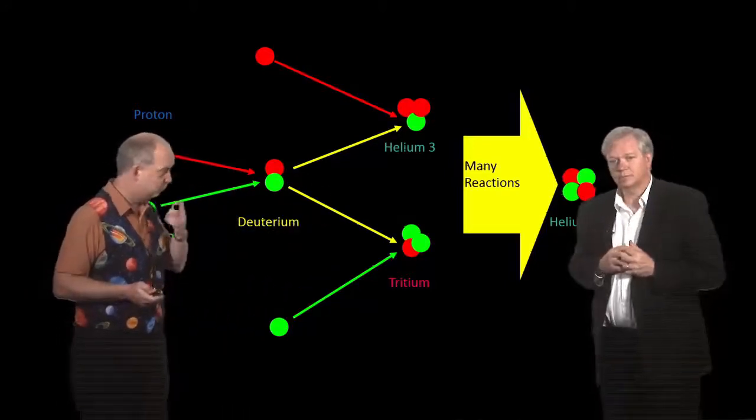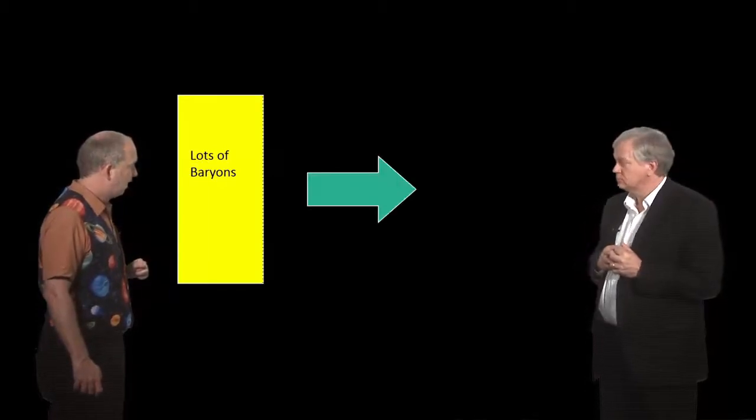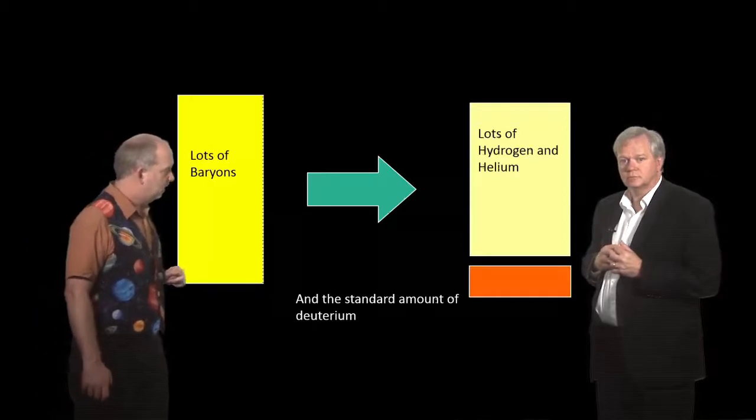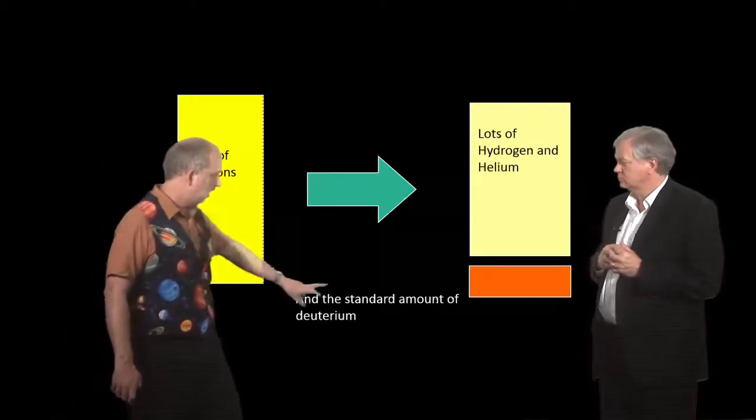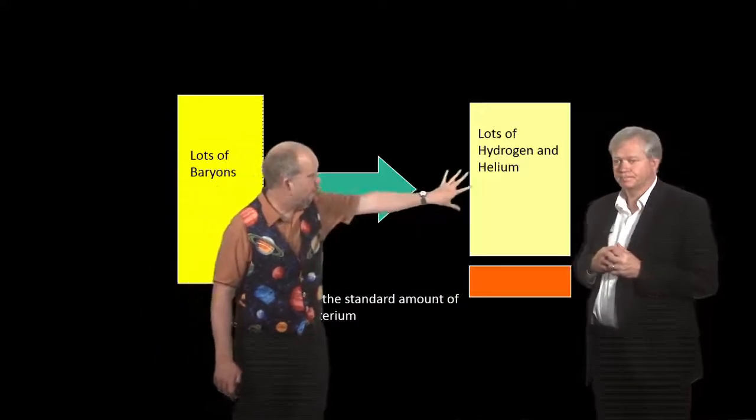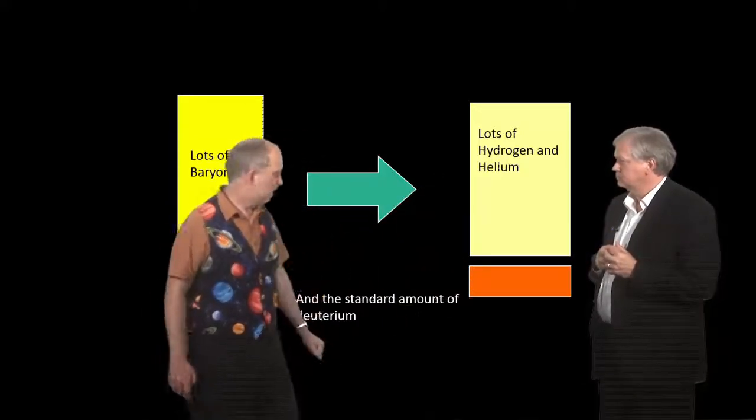So what that means is almost independent of what you start off with, you're always going to end up with the same amount, same density of deuterium left over, because it's just whatever the density is when they're far enough apart that they won't collide or interact and get destroyed. And that's a very interesting sort of measurement stick. So the idea is, let's say you had a universe which had lots of baryons, baryons being protons, neutrons, anything like us, to begin with.